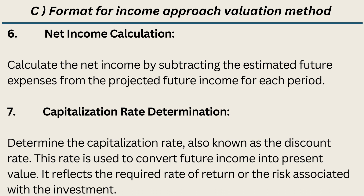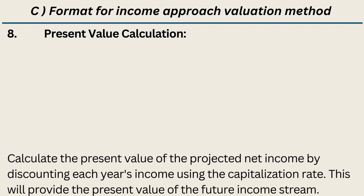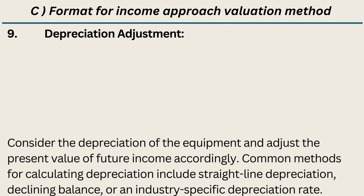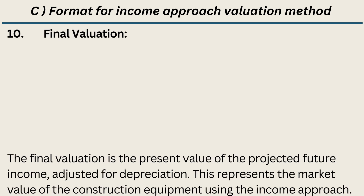Step 6: Net Income Calculation — calculate net income by subtracting estimated future expenses from projected future income for each period. Step 7: Capitalization Rate Determination — determine the capitalization rate, also known as the discount rate, which converts future income into present value and reflects the required rate of return or risk. Step 8: Present Value Calculation — calculate the present value of projected net income by discounting each year's income using the capitalization rate. Step 9: Depreciation Adjustment — adjust the present value using straight-line, declining balance, or industry-specific depreciation methods. Step 10: Final Valuation — the final valuation is the present value of projected future income, adjusted for depreciation, representing the market value of the equipment.